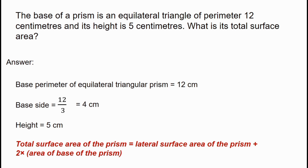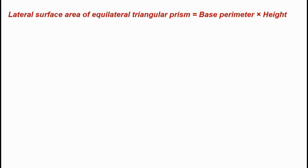The lateral surface area of the prism equals the base perimeter multiplied by the height.